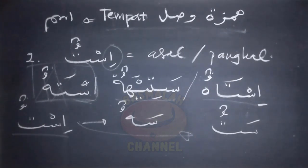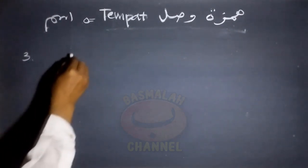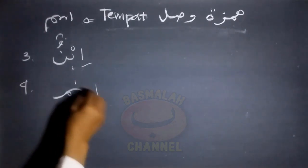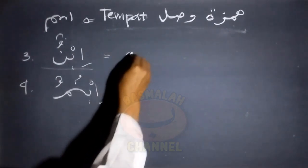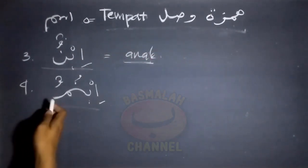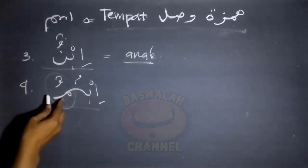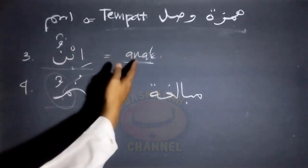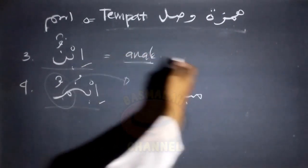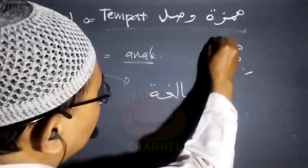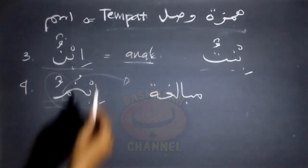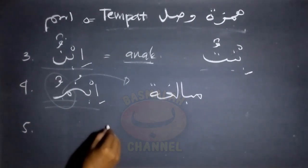Yang ketiga adalah lafad 'ibnun' dan yang keempat adalah lafad 'ibnumun'. Ibnun maknanya adalah anak laki-laki. Sementara mim yang ada pada lafad ibnumun adalah merupakan mim tambahan yang dimaksudkan untuk makna mubalagoh. Jadi ibnun maknanya anak laki-laki, sementara ibnumun maknanya adalah benar-benar anak laki-laki. Untuk anak perempuan adalah lafad 'bintun'. Keberadaan mim pada ibnumun adalah untuk tujuan mubalagoh.